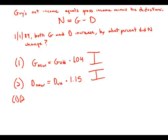The real crux of this problem is what happens when we put these things together. We know that the old net income was the old gross minus the old deduction. The new net income should be 1.04 G minus 1.15 D. And the question is, can we figure out anything about this?